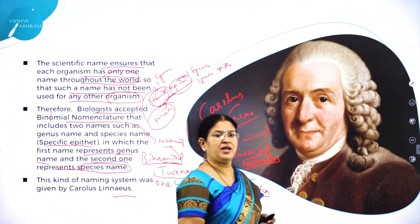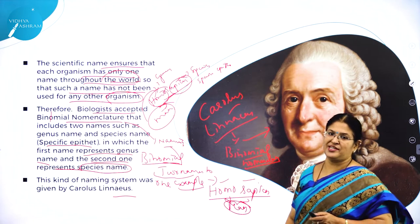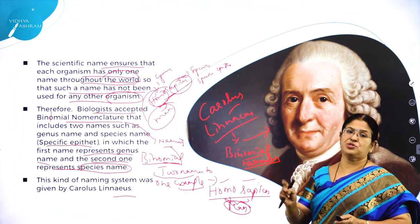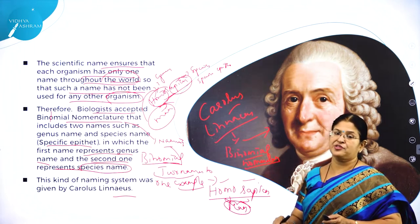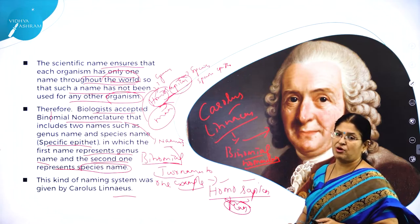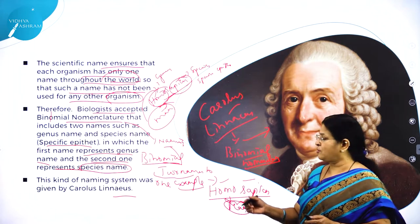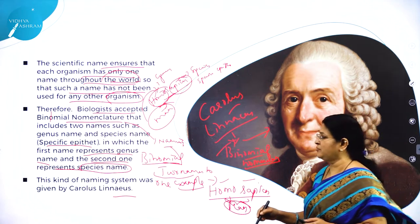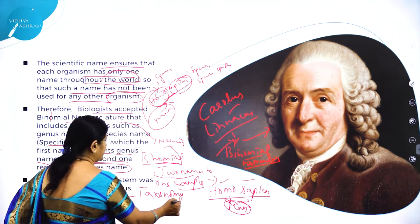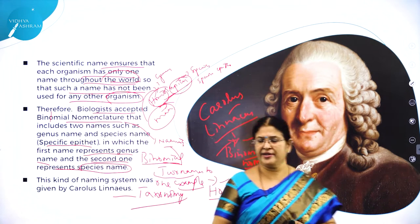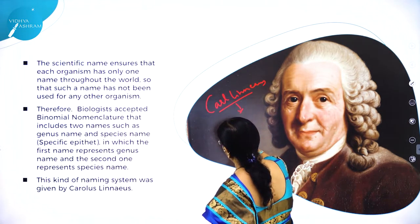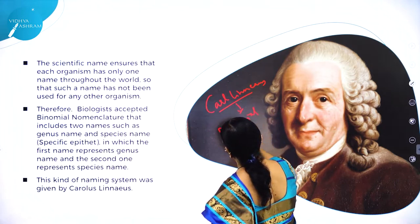The man behind binomial nomenclature is Carolus Linnaeus. He is the man who proposed binomial nomenclature. He is also called the father of taxonomy — taxonomy meaning classification. Who is he? He is Carolus Linnaeus, and he is the man who proposed binomial nomenclature.